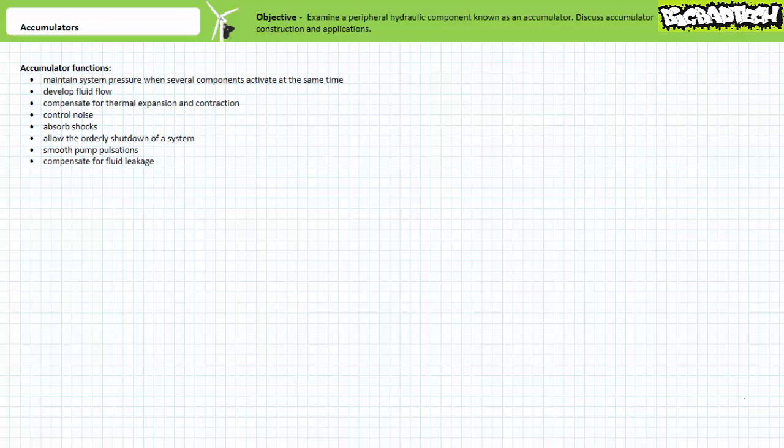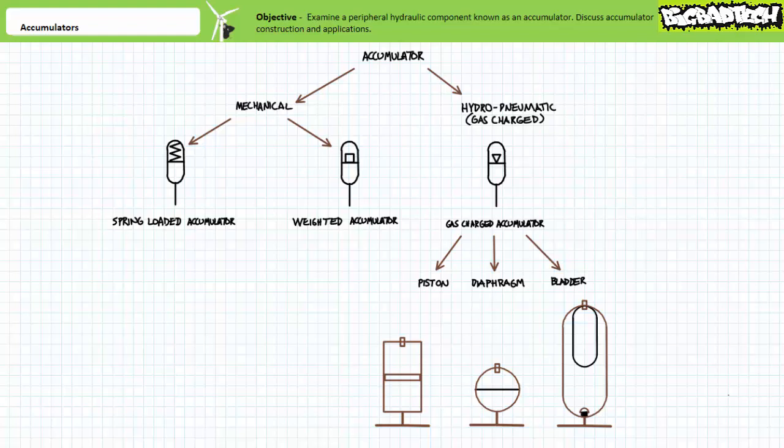Accumulators are generally divided into two classes based on how the accumulator maintains force on the stored liquid: mechanical and hydropneumatic, or gas-charged accumulators. Mechanical accumulators are further subdivided into those that use springs and those that use weights to pressurize fluid.